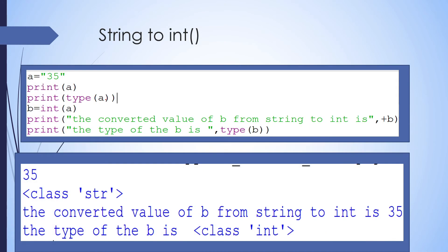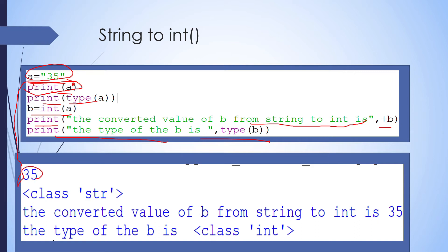Now we see the conversion of string to int. A value stored in string type — with double quotes, meaning string type value — is stored in variable a = '35'. Print a, then print type(a) to identify the type. Then b = int(a), and we print the converted value of b from string to int.